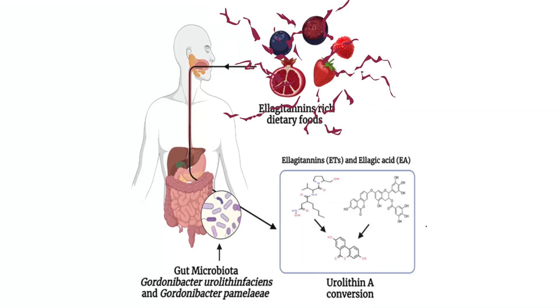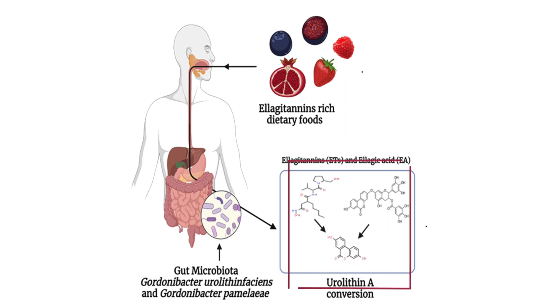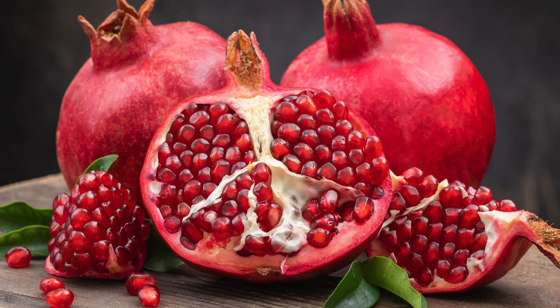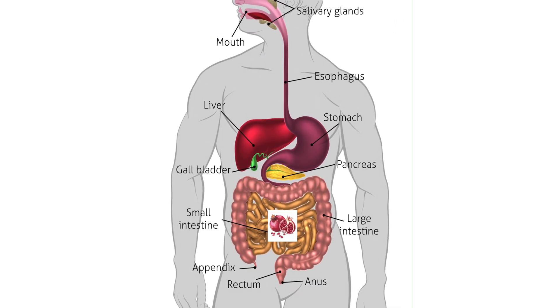Urolithin A is a natural gut microbiome-derived food metabolite. It all starts when we eat a food that is high in elagitannins. These elagitannins get converted to elagic acid in the small intestine. Elagitannins and elagic acid are polyphenols present in highest concentration in walnuts, pomegranates, and blueberries. This elagic acid travels through our GI tract to the small and large intestine, where microbes digest it and excrete the compound urolithin A.